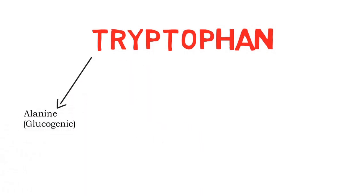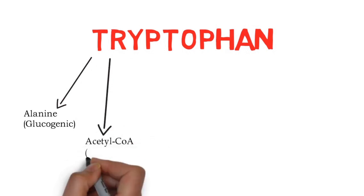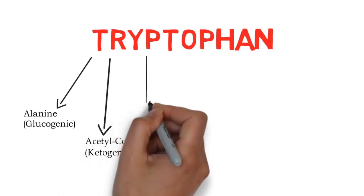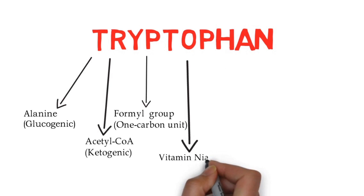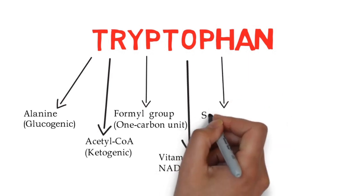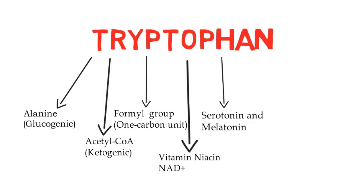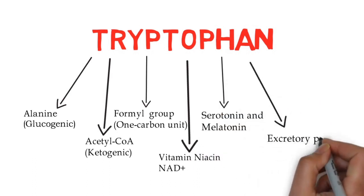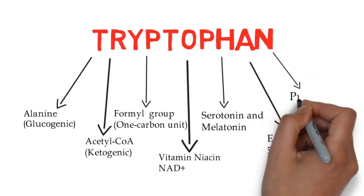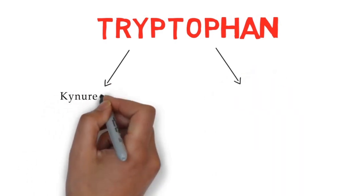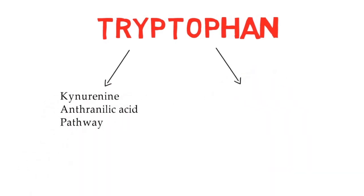Substances produced from tryptophan are: first, alanine (glucogenic); second, acetyl coenzyme A (ketogenic); third, formyl group (one carbon unit); next, vitamin niacin and nicotinamide adenine dinucleotide; serotonin and melatonin; and finally excretory products hydroxy indoleacetic acid and indican. Tryptophan can also be incorporated into protein.